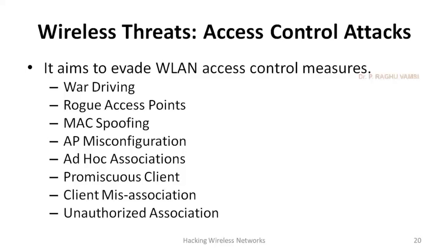Access control means who can access which access point. Everyone cannot access every access point; there will be a limitation that some group of users can use only one access point. The first attack is war driving. In war driving, the attacker will use powerful devices, sit in a car, and roam around the organization or campus to discover what access points are available in that locality and record all of them.